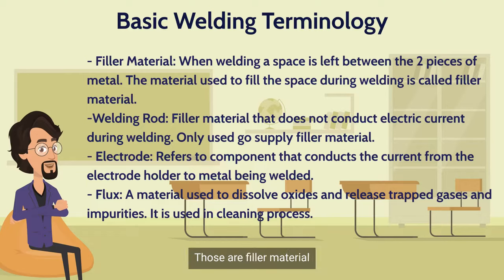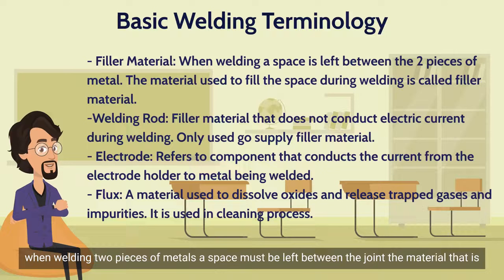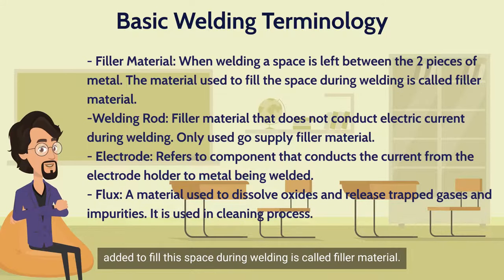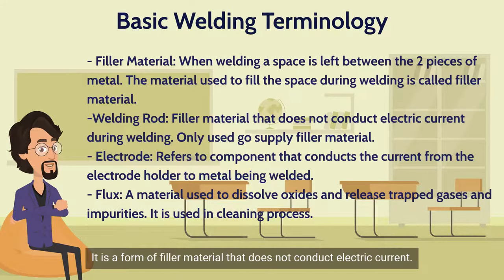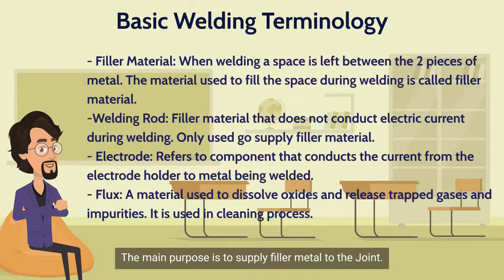The first term is filler material. When welding two pieces of metals, a space must be left between the joint. The material that is added to fill this space during welding is called filler material. The next one is welding rod — it is a form of filler material that does not conduct electric current. Its main purpose is to supply filler metal to the joint.